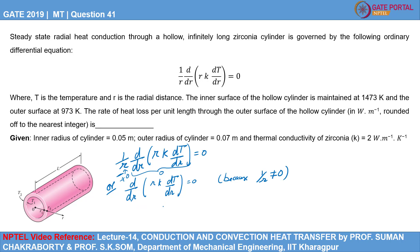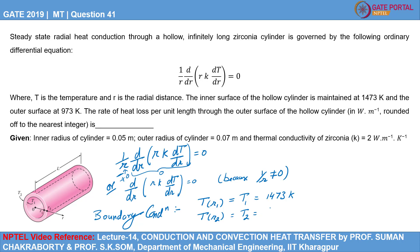The boundary conditions for this problem are: first, the temperature at r = R1 (the inner surface) is T1 = 1473 K. Likewise, the temperature at r = R2 (the outer surface) is T2 = 973 K. In order to calculate the rate of heat loss per unit length, we need to solve this ordinary differential equation.